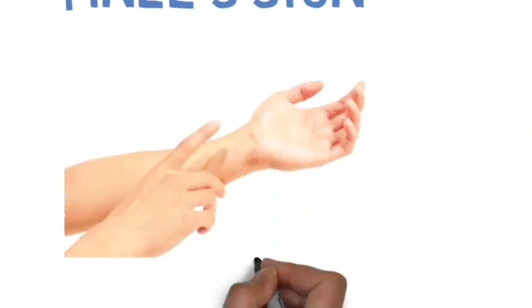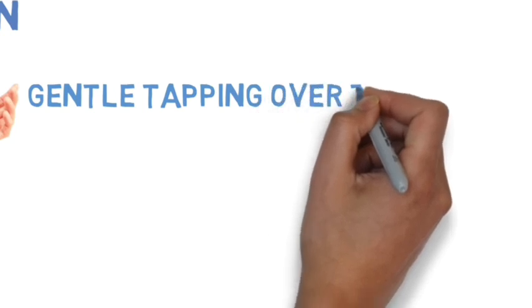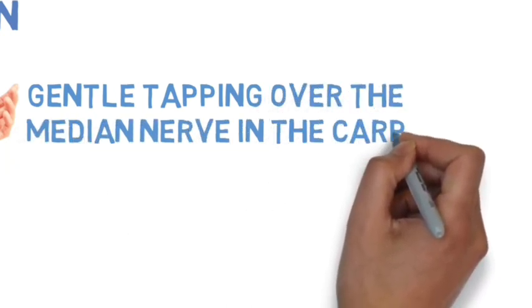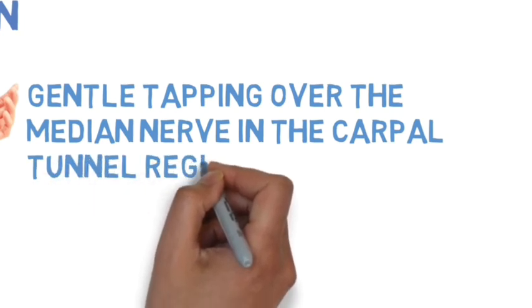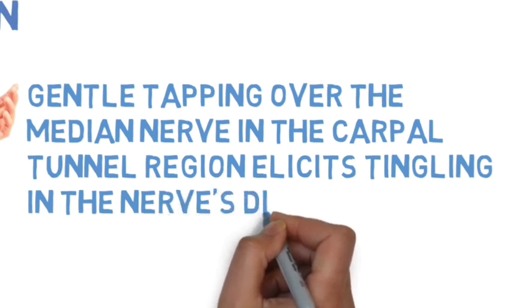The next is Tinel's sign, in which gentle tapping over the median nerve in the carpal tunnel region elicits tingling and numbness in the nerve's distribution.